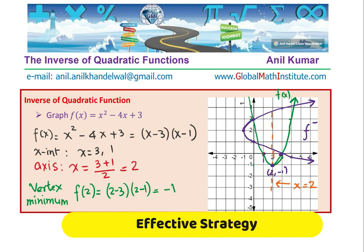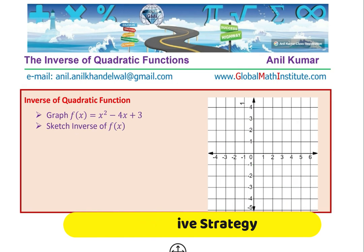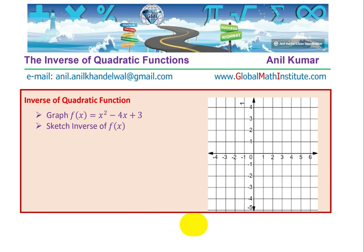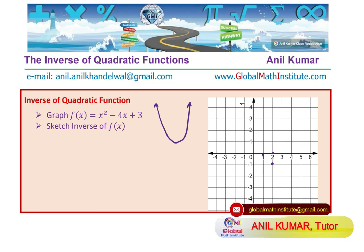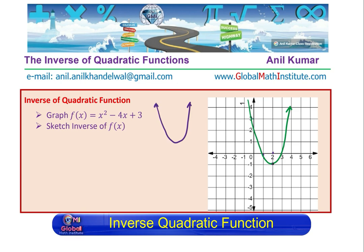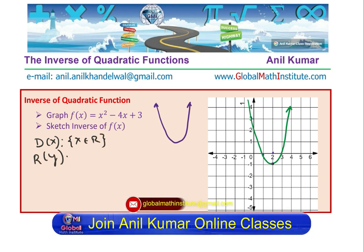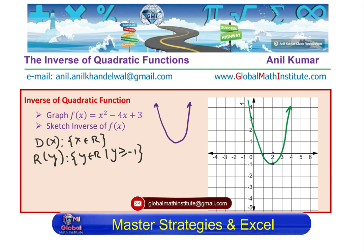Now let's work on the concept. The function had a vertex at (2, minus 1). The minimum value is minus 1, so the domain of this function is x belongs to all real numbers. However, the range of the function is y belongs to real numbers where y is greater than or equal to minus 1. For the inverse, we sketched it by swapping points: (2, minus 1) became (minus 1, 2).